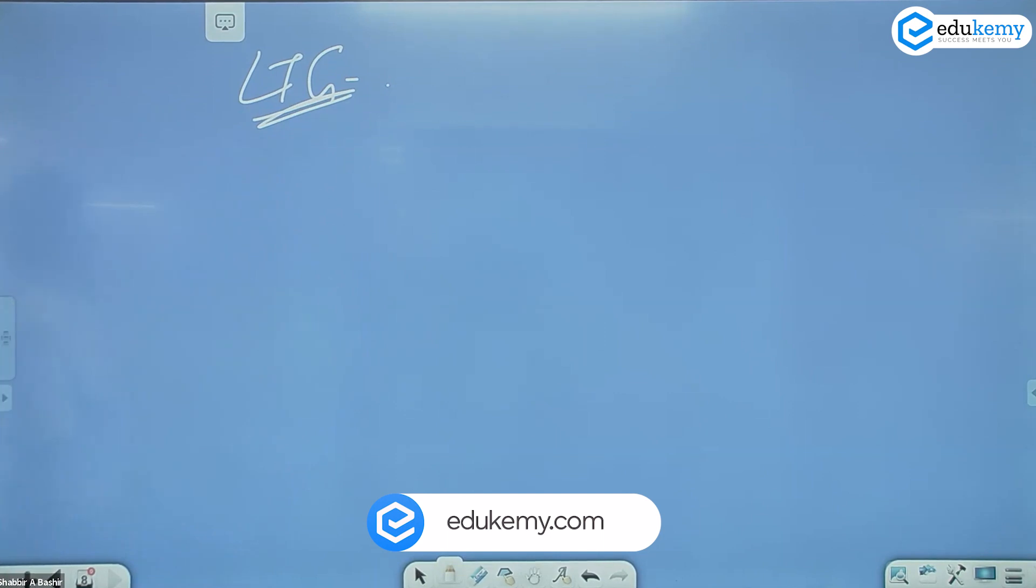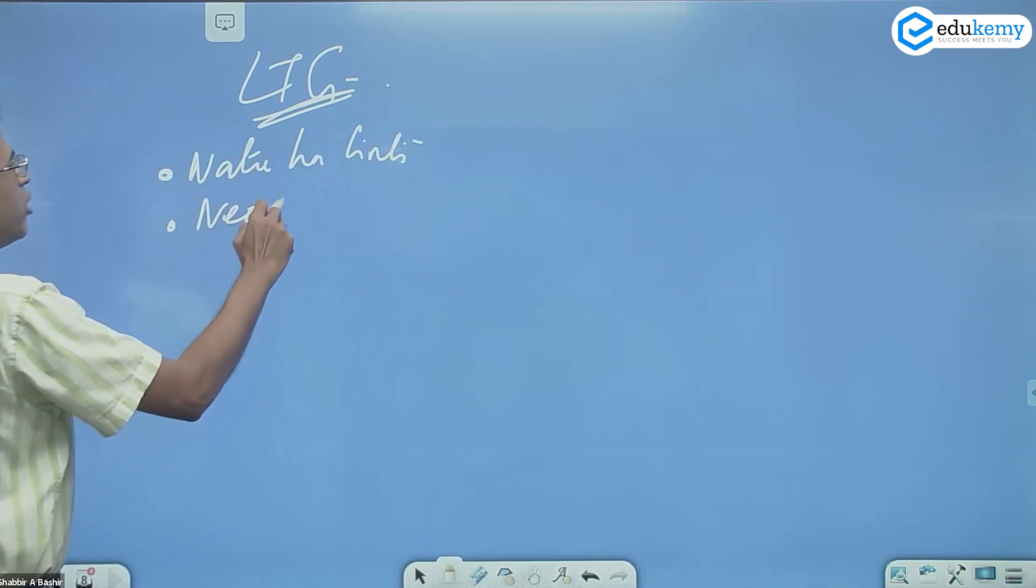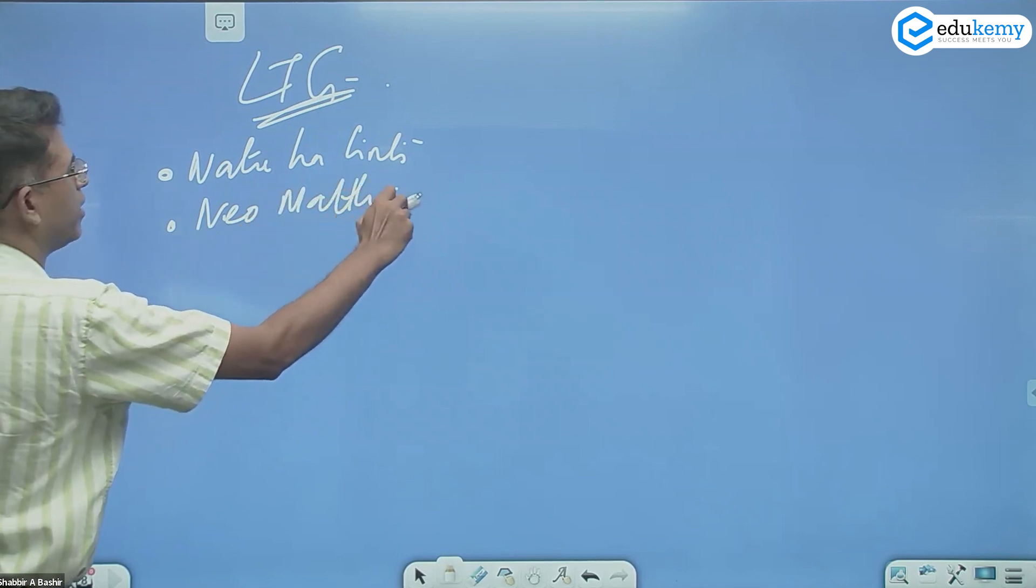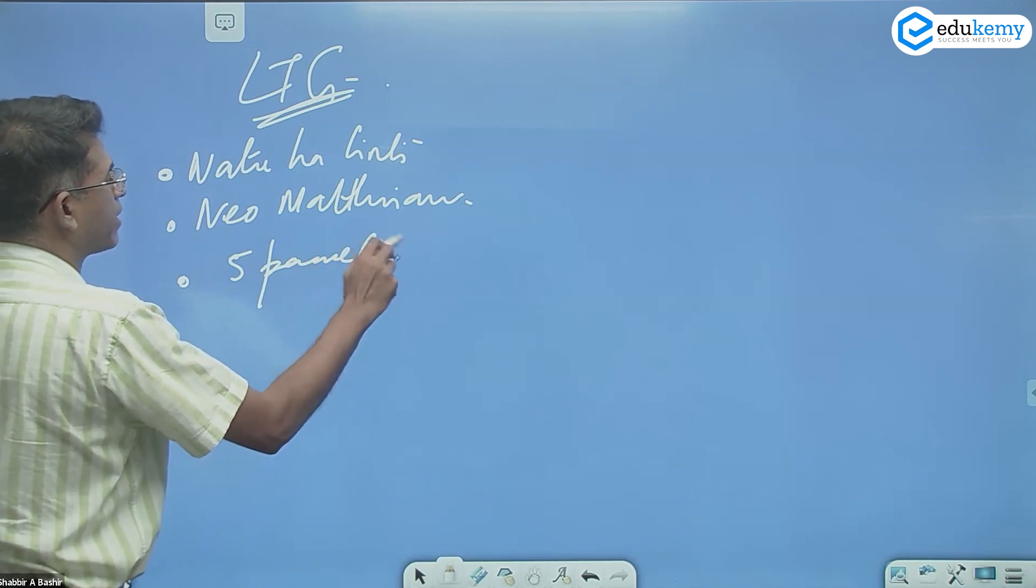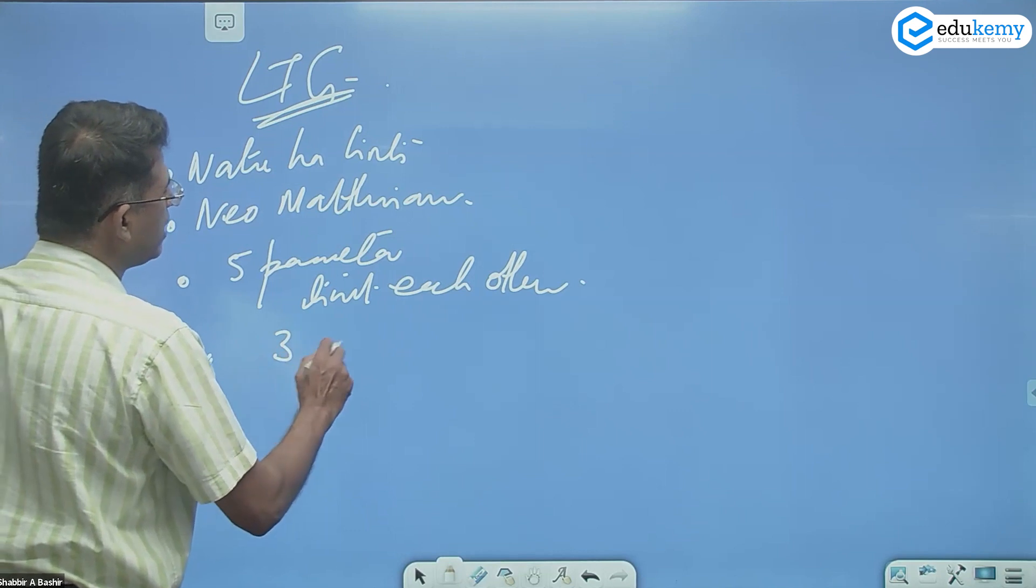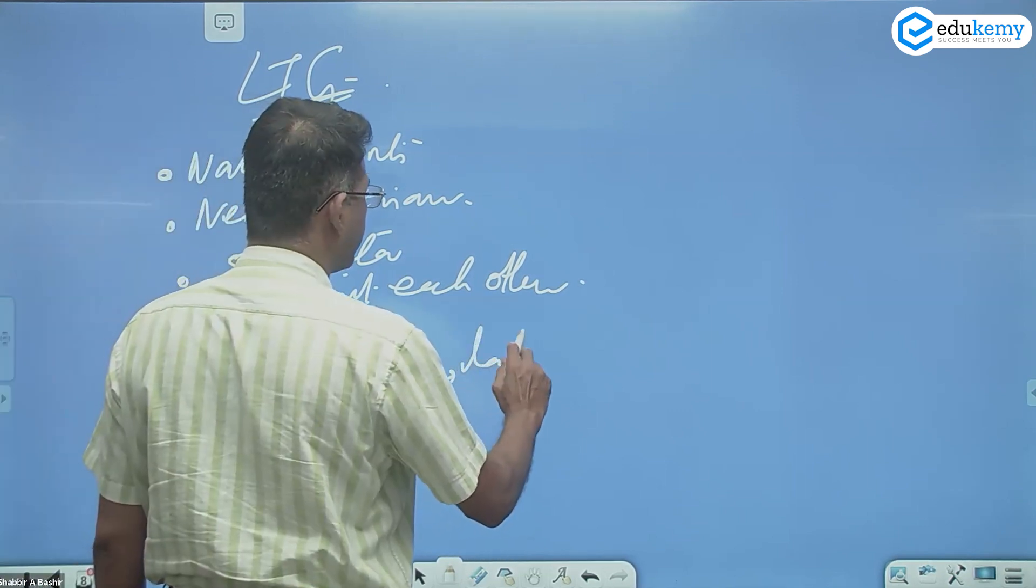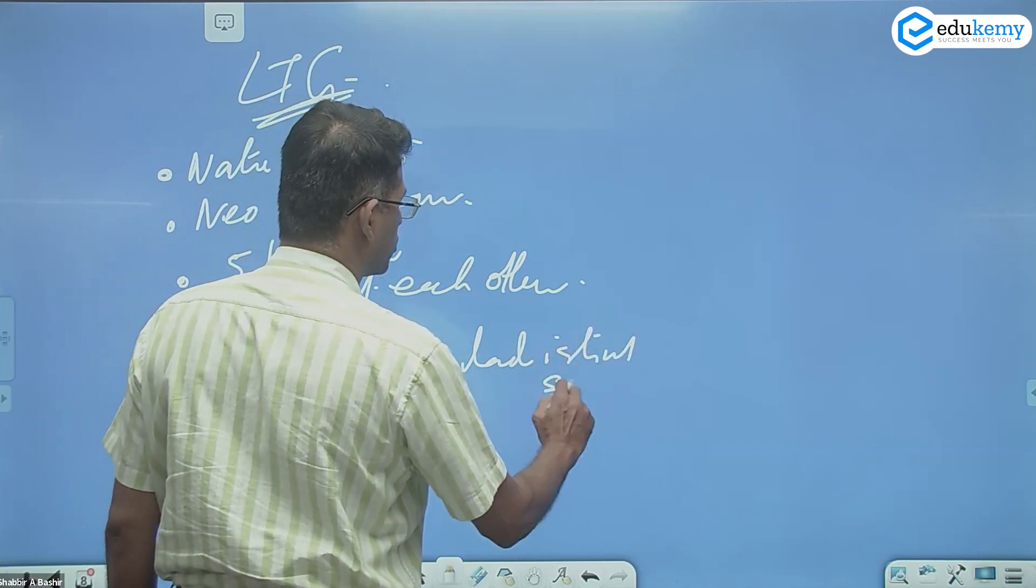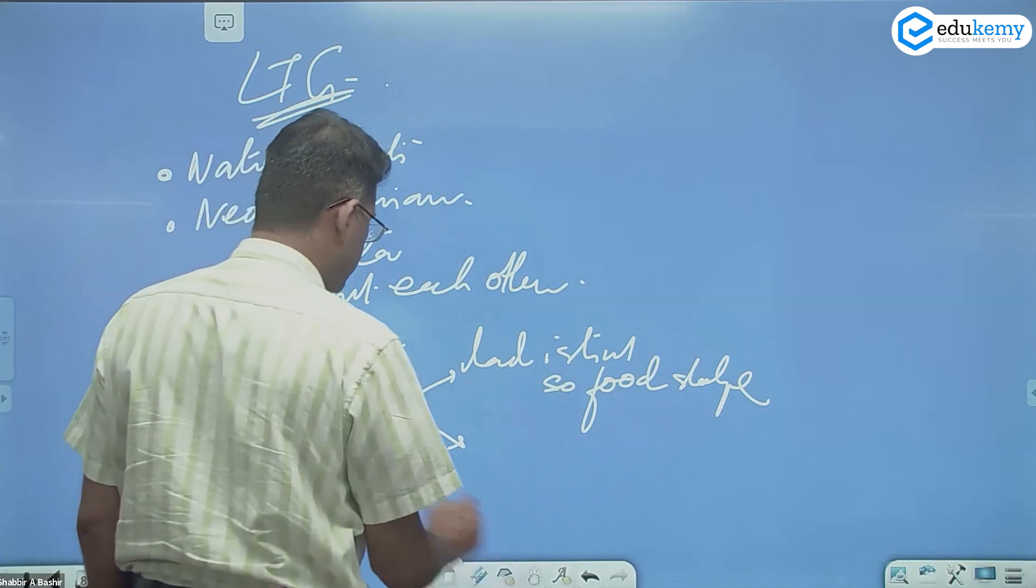Four or five points: nature has limits, it is neo-Malthusian, five parameters limit each other. There are three main limits. Land is limited so food shortages.